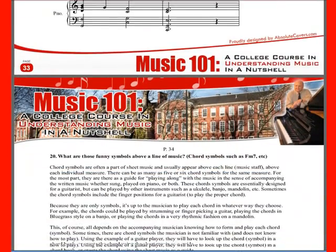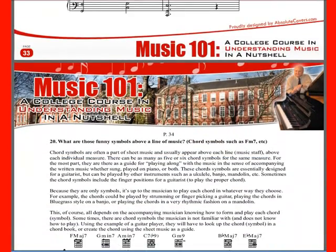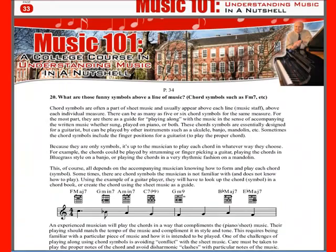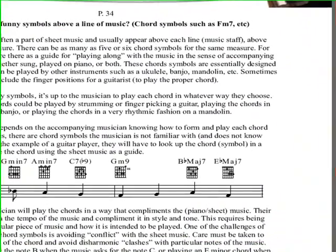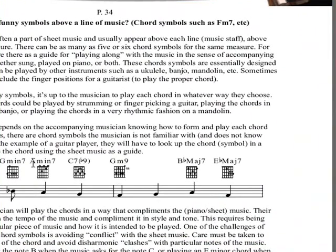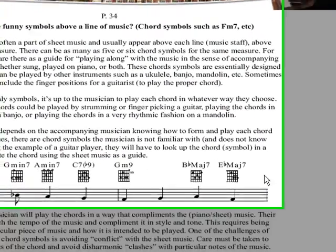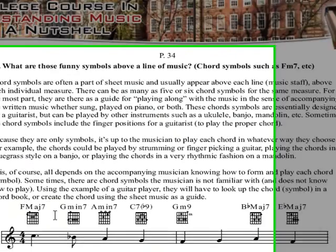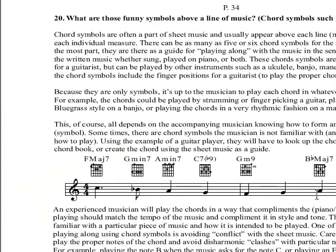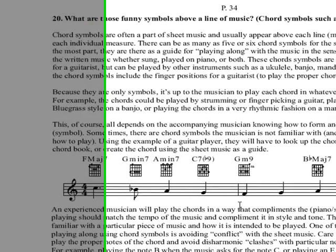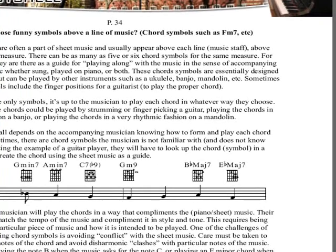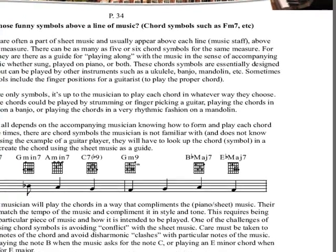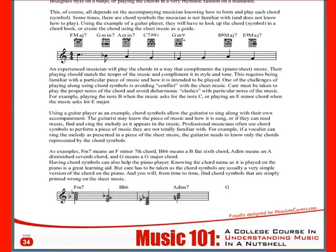And get down to the last chapter — what are those funny symbols above a line of music? Chord symbols, such as F minor seventh, G seventh — all these chord symbols that you see in here. The piano symbols are up here, the guitar symbols are there, but they're really saying the same thing — they're telling you what harmony would support that melody. So you'll learn a lot about that.